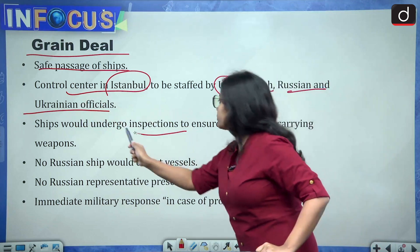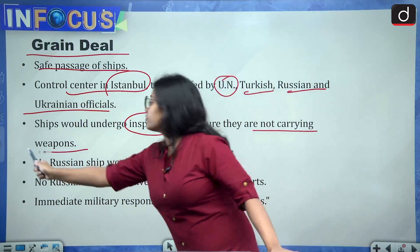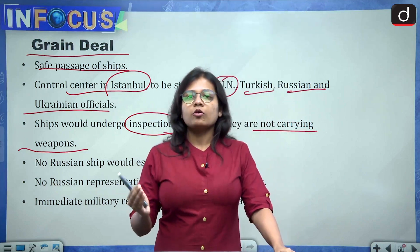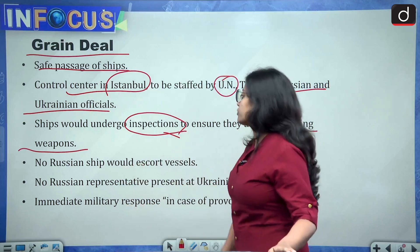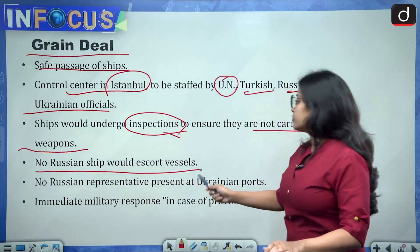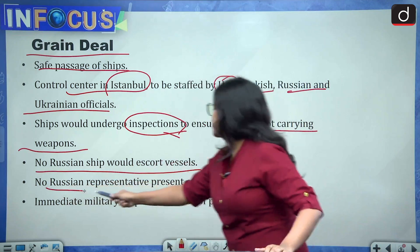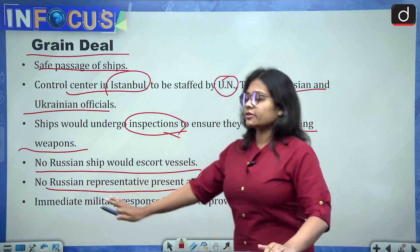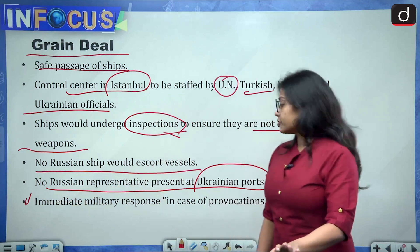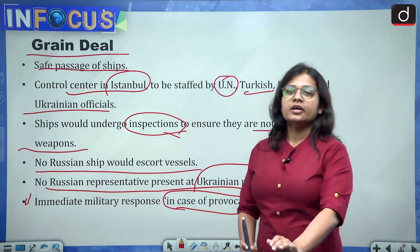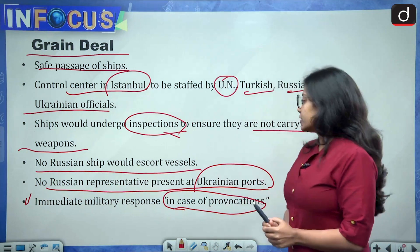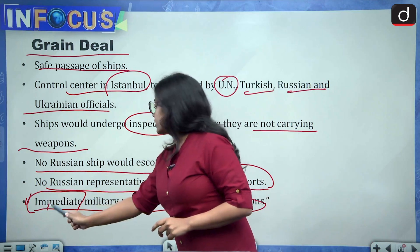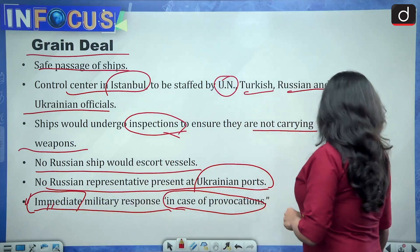The ships would undergo inspections to ensure they are not carrying any weapons, as Russia and Ukraine are at war with each other and either side could potentially send weapons through these ships. No Russian ships would serve as escort vessels and no Russian representative will be present at Ukrainian ports. Ukraine has said that in case of any provocation or suspicious activity from the other side, they will be allowed to take an immediate military response — the important word here is 'immediate.'